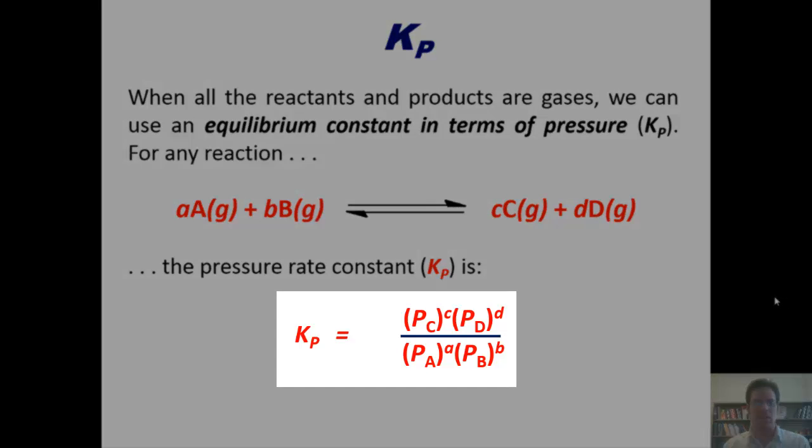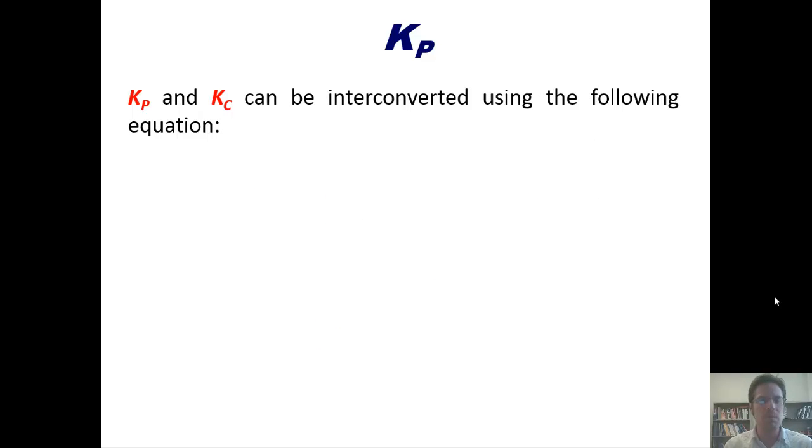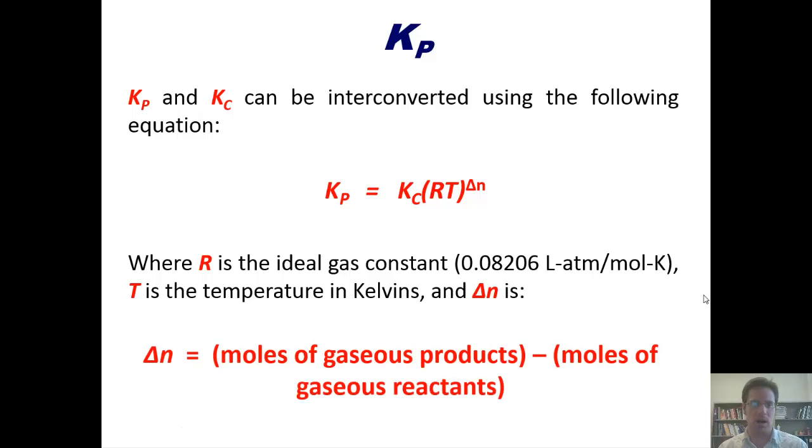So Kc, once again, is this equilibrium expression in terms of concentration, usually in moles per liter. Whereas Kp is the equilibrium constant in terms of pressure, usually in atmospheres or millimeters of mercury or something. Now Kp and Kc can be interconverted by using this equation: Kp equals Kc multiplied by RT raised to the delta N, where R is the ideal gas constant, and this is the version that I usually use. You want to make sure that you choose an ideal gas constant that has matching units. T is the temperature in kelvins, and delta N is the number of moles of gaseous products minus the number of moles of gaseous reactants. And that's all based on the coefficients in the balanced chemical reaction. In other words, it's the change of moles as you go from left to right in the chemical reaction.